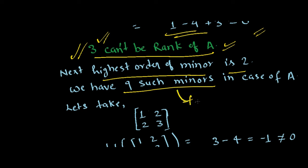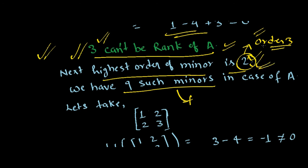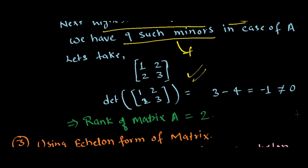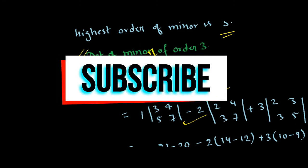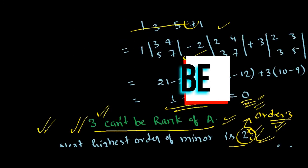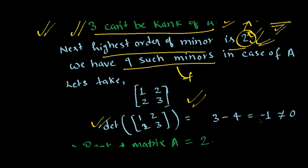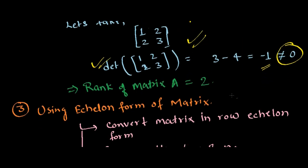The next highest order minor is 2, and we have 9 such minors. We can take any of these 9 minors and check whether it gives a non-zero determinant. As per the definition, if 2 is the rank, then all minors of order 3 must have determinant zero — which we verified. We took one minor of order 2 and found its determinant is minus 1, which is non-zero. Therefore, the rank of the matrix is 2.